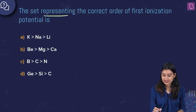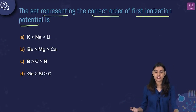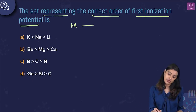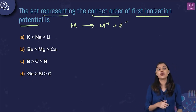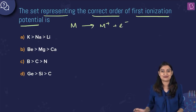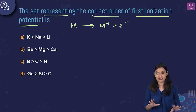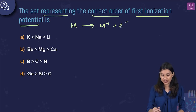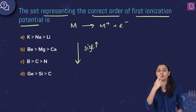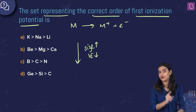Here they're asking which set represents the correct order of first ionization potential. First ionization potential is the energy required to remove the most loosely bound electron from the valence shell of a neutral gaseous isolated atom. As we go down a group, size increases, the effective nuclear pull on the outermost electron decreases, so ionization energy decreases down the group.